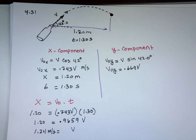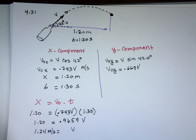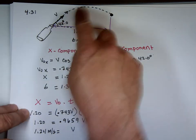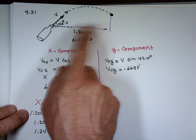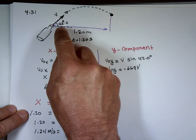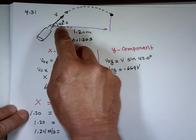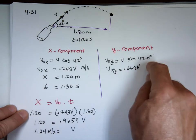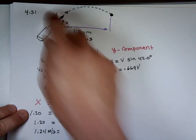In this case, we didn't need the y-direction — they gave us enough information in x alone. But remember: if it's not horizontal, the initial x-velocity is always V times cosine of the angle, and the initial y-velocity is always V times sine of the angle.